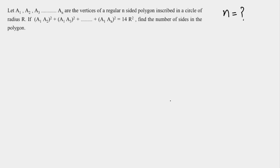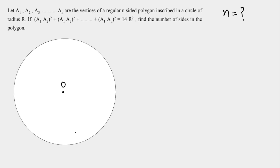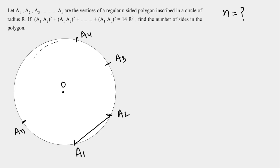Let's start with the circle. Let the center of the circle be O. I'm going to mark the vertices: a1, a2, a3 and so on till a4, and if you continue, the last one will be a_n. Joining the vertices, the polygon will appear inscribed in the circle of radius R.